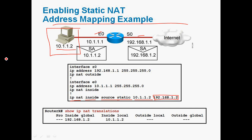The private IP address 10.1.1.2 will be translated into the public IP address 192.168.1.2. Then we configure IP NAT inside and outside on the interfaces: go to interface E0 and give 'IP NAT inside', then go to interface Serial 0 and give 'IP NAT outside'. When a packet from 10.1.1.2 is received by the router, it checks the NAT table and automatically translates it to 192.168.1.2.